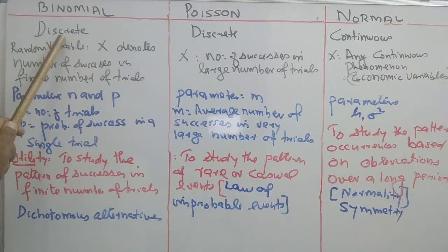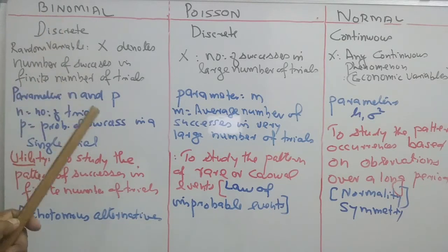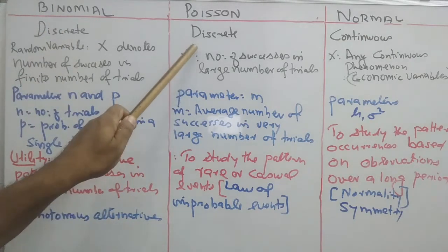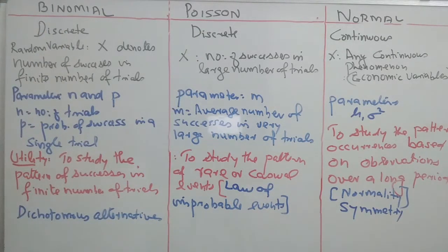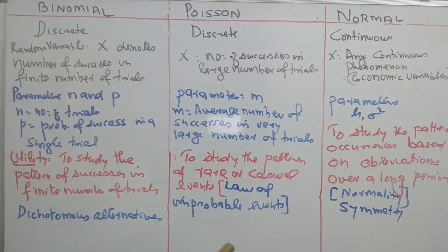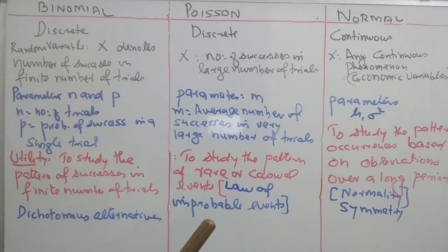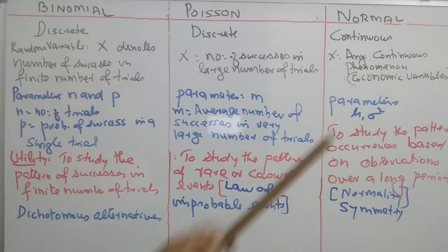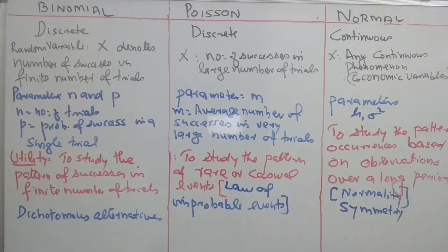Binomial is a discrete probability distribution. Poisson is discrete, but normal is continuous. Binomial and Poisson are discrete. Discrete means the random variable assumes integer values. Continuous means it can assume any value in a specified interval.